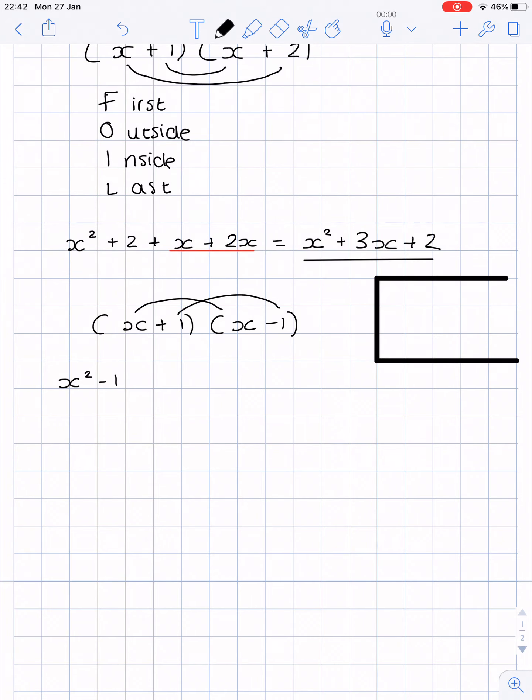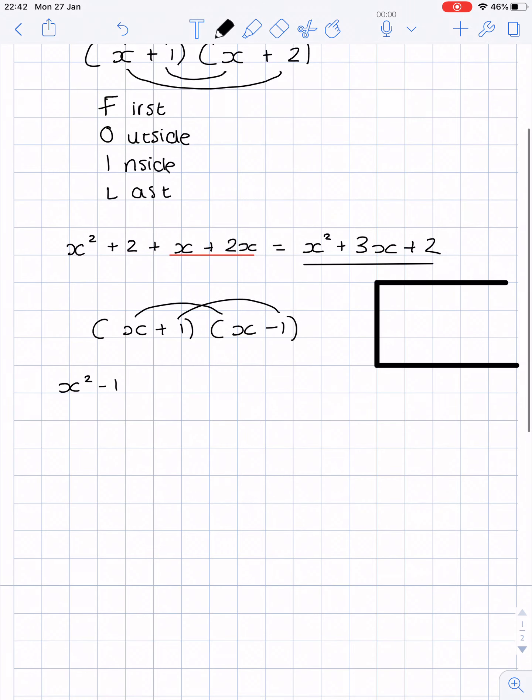Sorry, unless the operations are different. So if you have two negatives that would equal a positive. If you have a positive and a negative that would be a negative, and if you have a positive and a positive that would be a positive.